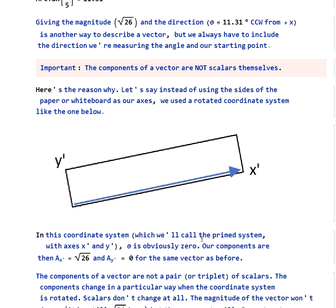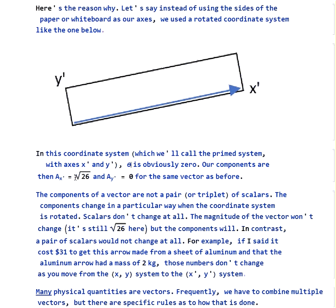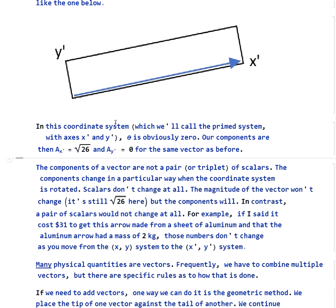Our theta is, of course, 0 since it's along this x prime axis. And our components are ax prime is the square root of 26, and ay prime is 0. That's a change from what we had before.